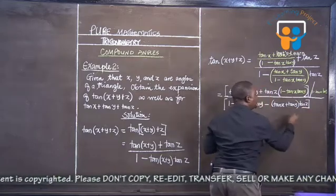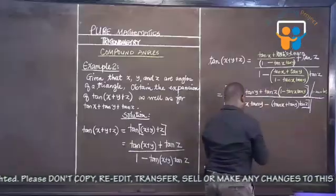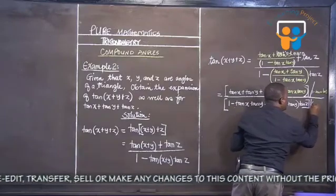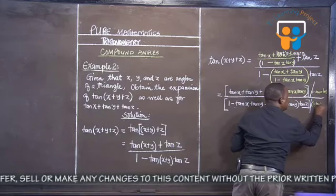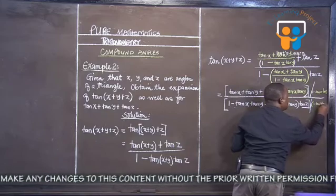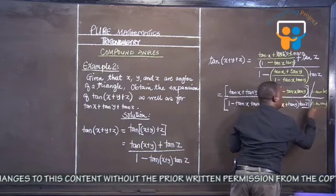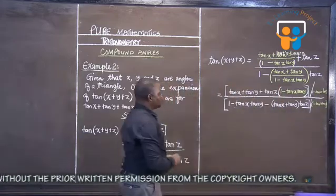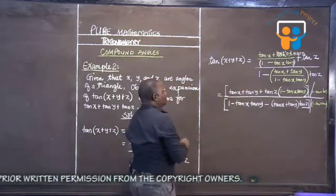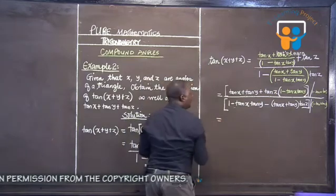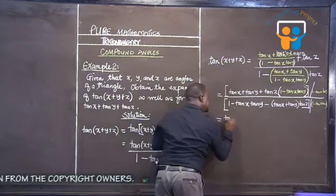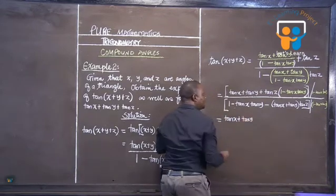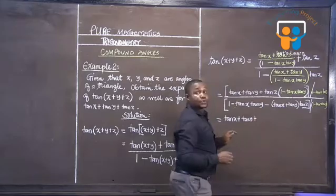And this is how we do it. We divide this one by what again? We divide that one by, we have 1 minus tan x tan y. Obviously, these ones will die out. They will die out. And if they do, we remain with what? Here we're going to remain with tan x plus tan y plus, we are multiplying through.